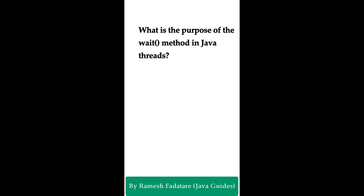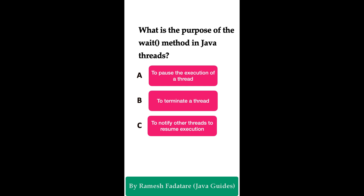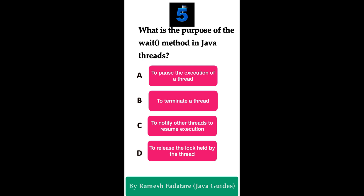Welcome to Java Quiz Series. Here is one more question: what is the purpose of the wait() method in Java threads? Option A: it forces the execution of a thread. Option B: to terminate a thread. Option C: to notify other threads to resume execution. Option D: to release the lock held by the thread. You have five seconds to answer this question. The correct answer is Option A: it forces the execution of a thread.